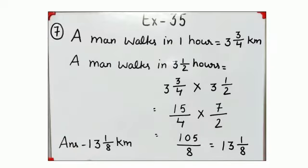We will continue exercise 35, question number 7. Look at your book. A man walks 3 and 3 by 4 kilometers in one hour. How far does he go in 3 and 1 by 2 hours?